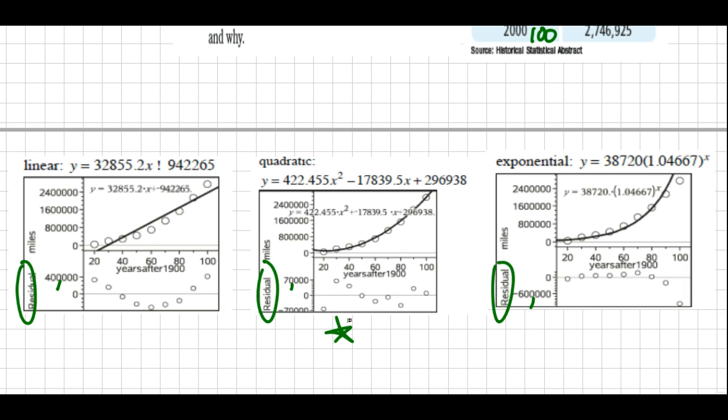So I would say if I had to pick between the three, this would be the one that I would choose as the best model. Quadratic is the best model because the residual plot is the most close to the x-axis.